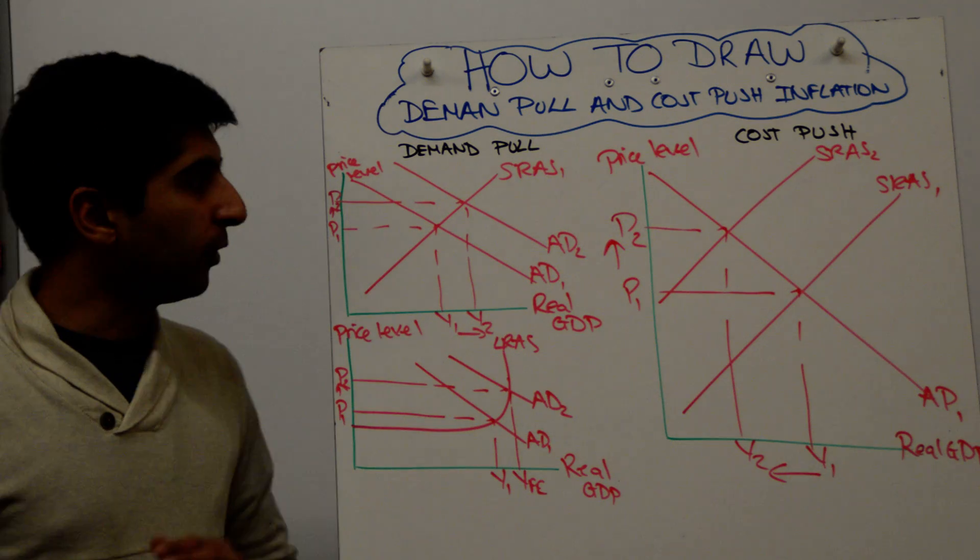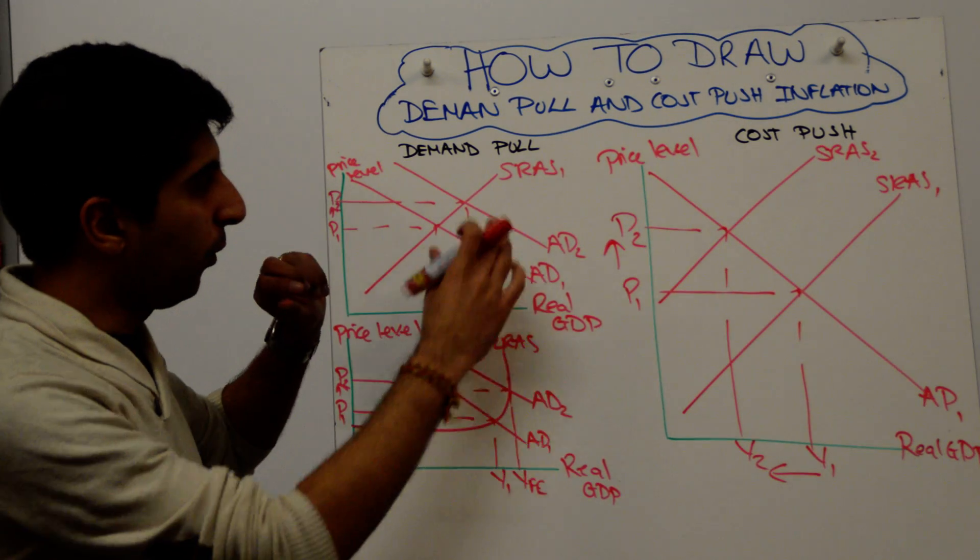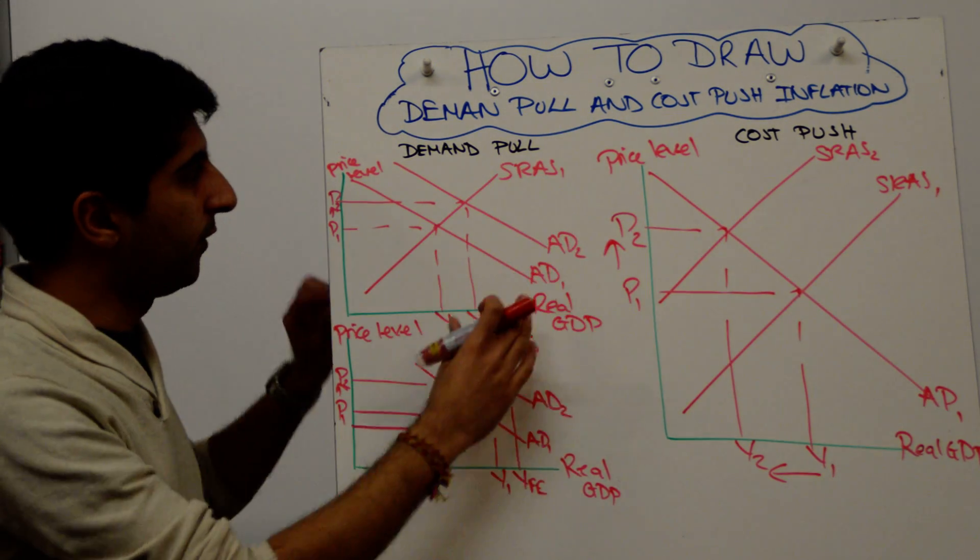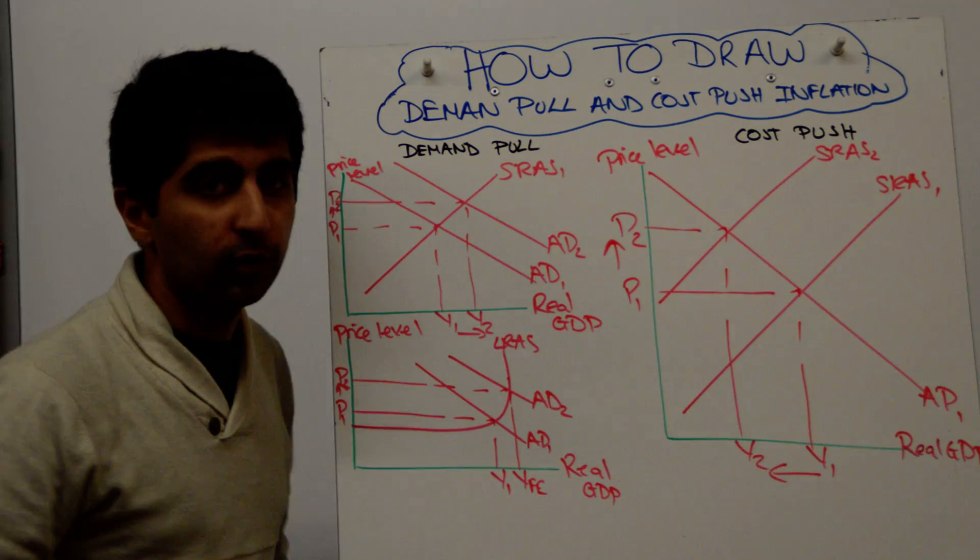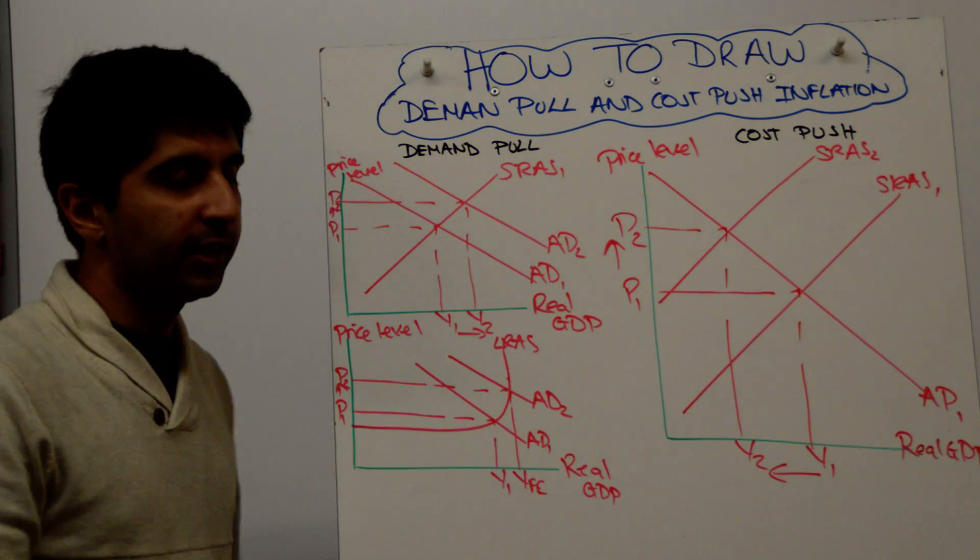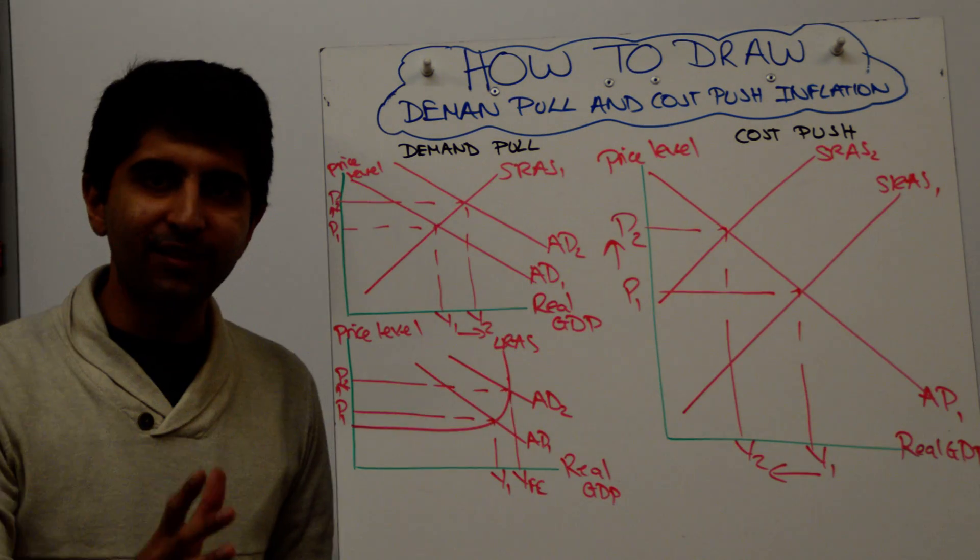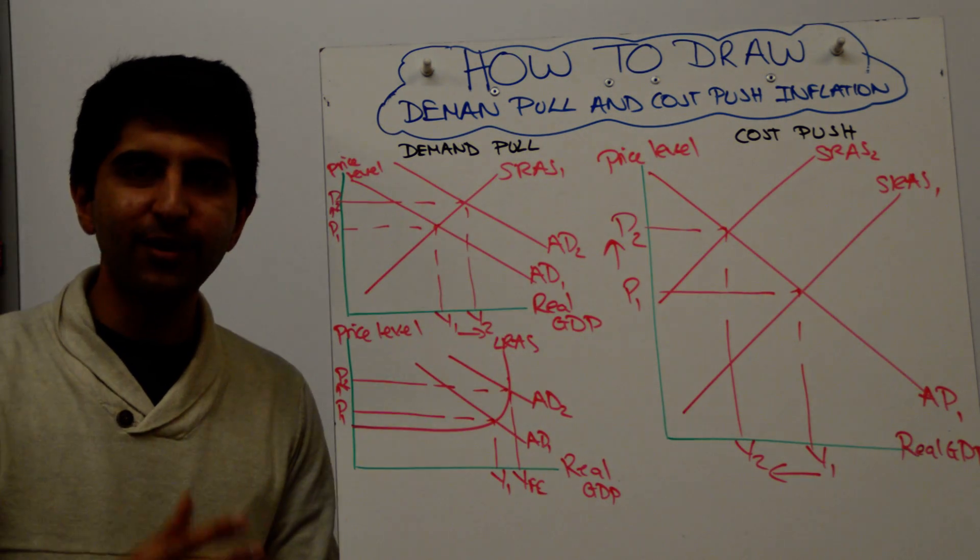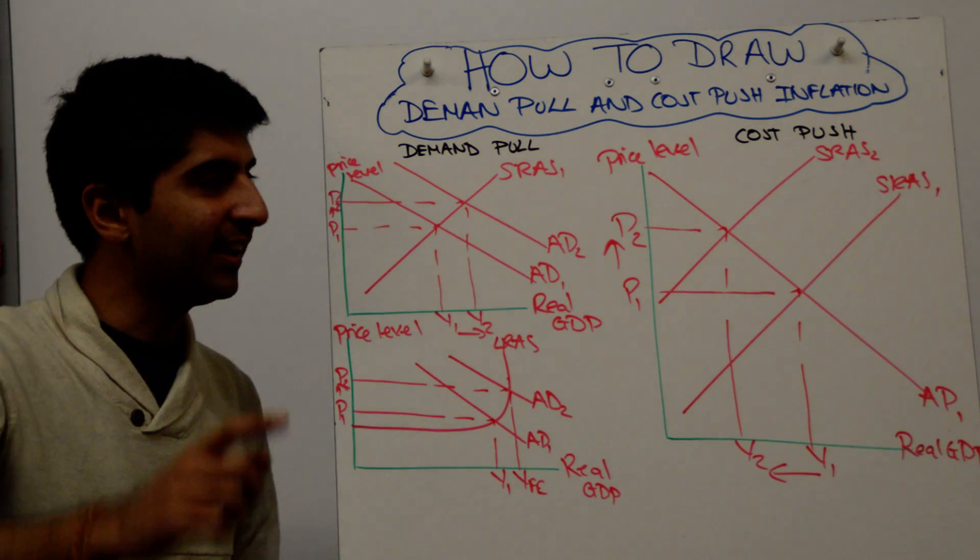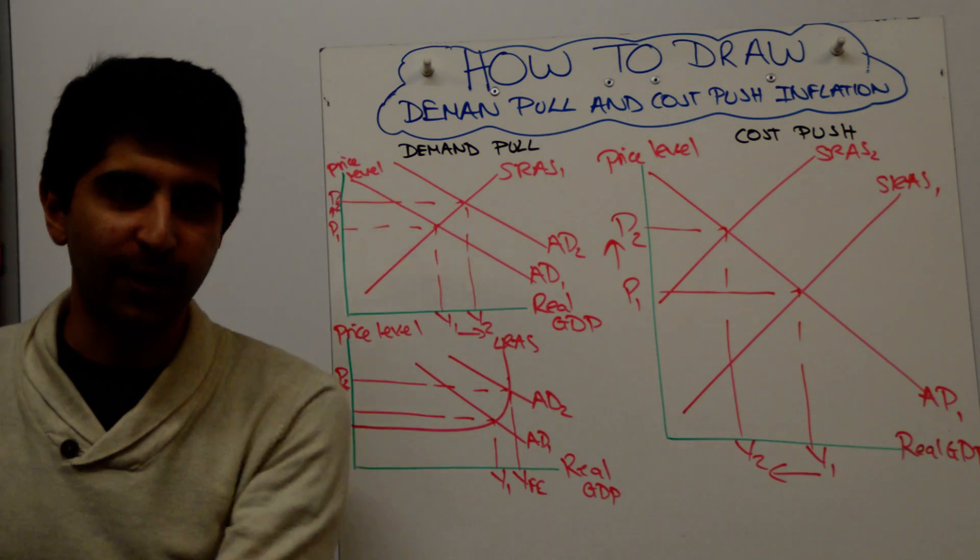Always double check that you label all your curves, all your axes, and all your equilibria. That has been done. All the diagrams have been completed. Pick whichever one you want to do, practice it, and then put it in your essay and put it in your exam and you'll be absolutely fine. Thanks very much guys, I'll see you on the next video.